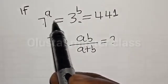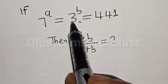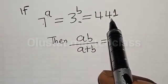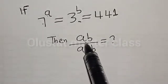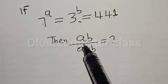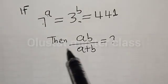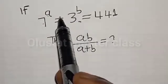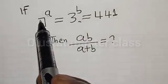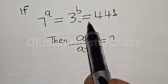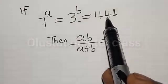If 7 raised to power A is equal to 3 raised to power B is equal to 441, then what is the value of AB divided by A plus B? Hi everyone, welcome to my class. In this class, we want to find the value of AB divided by A plus B, from this given exponential equation: 7 raised to power A is equal to 3 raised to power B, which is equal to 441.